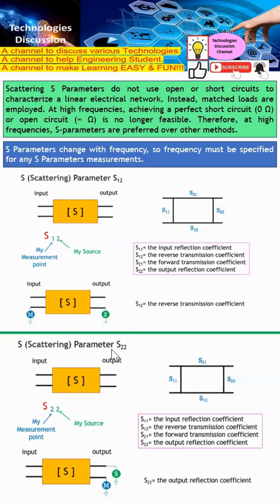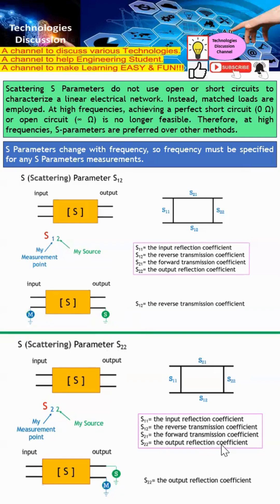Last but not least is S22. As the name implies, both the source and the measurement are at port 2. Therefore, S22 is known as the output reflection coefficient.